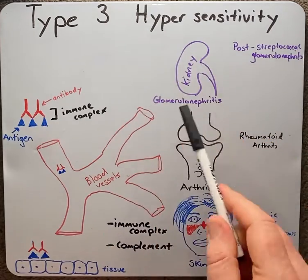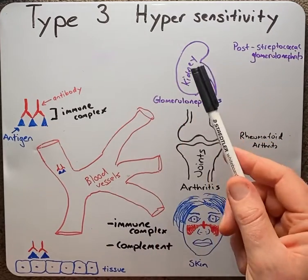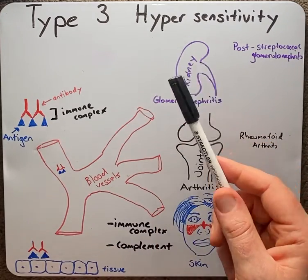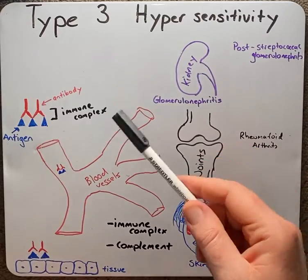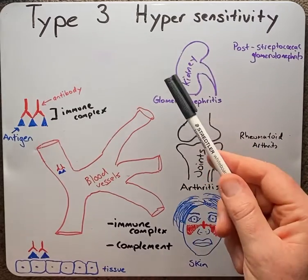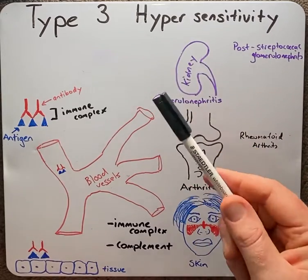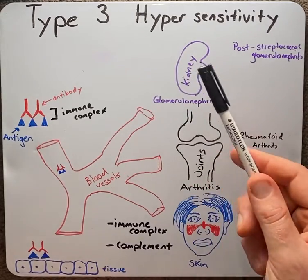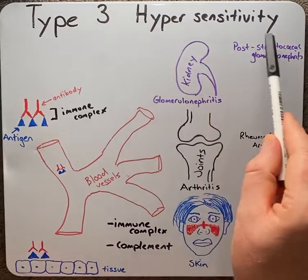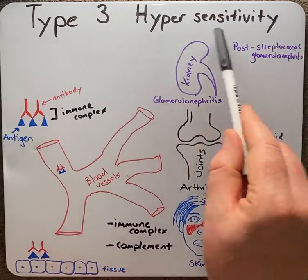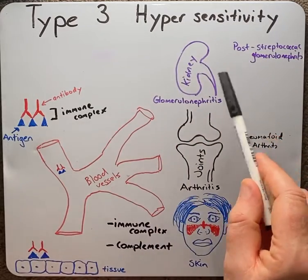Hypersensitivity reactions are excessive immune responses to normally harmless substances that induce inflammation and lead to tissue damage and death. There are four types of hypersensitivity reactions.